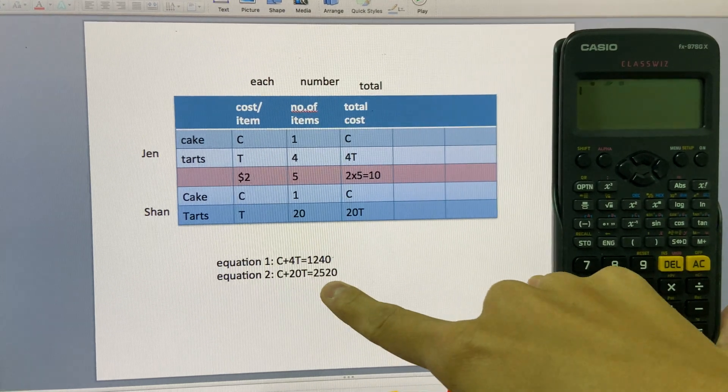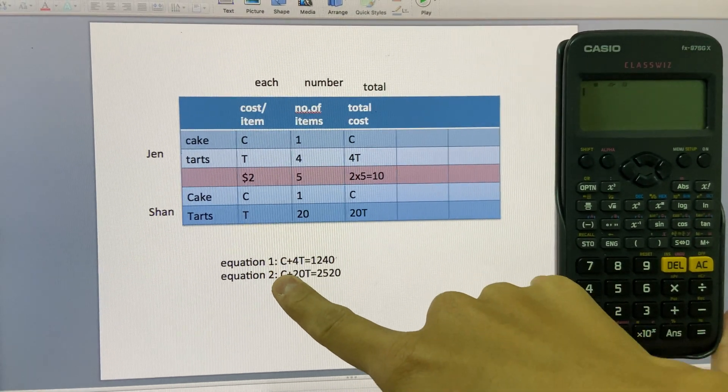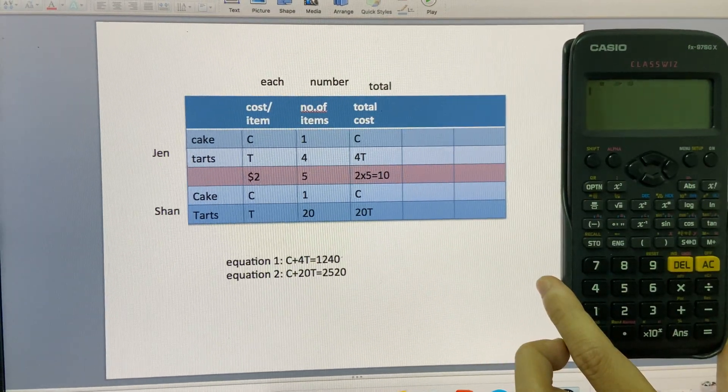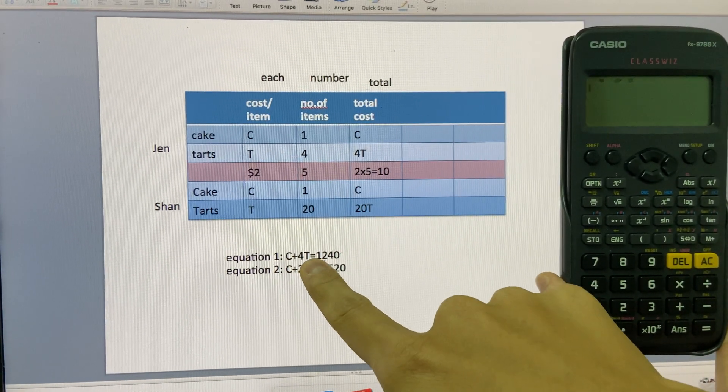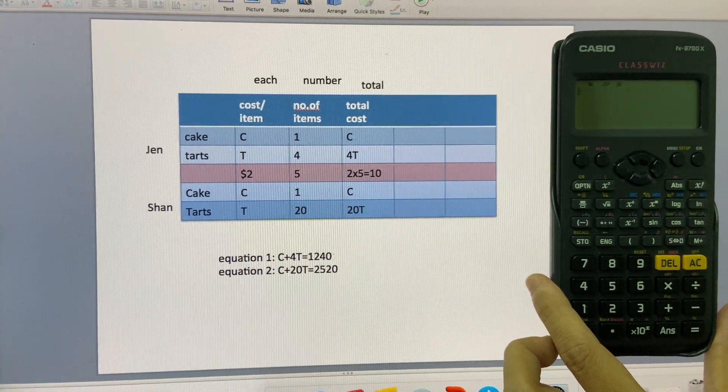It means all students can reach equation 1 and equation 2. But how do you solve equation 1 and 2 to get your C and T using this calculator?